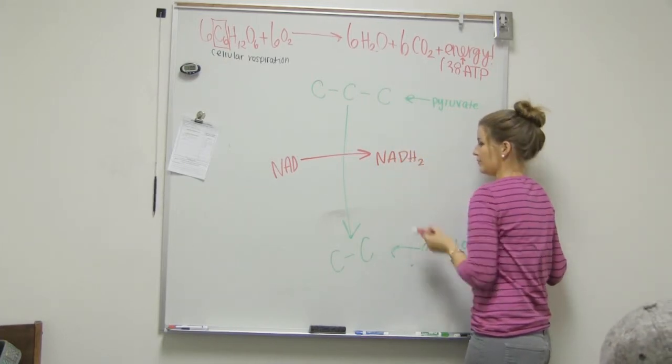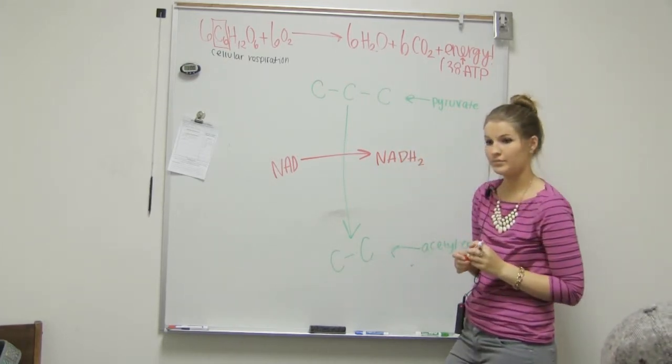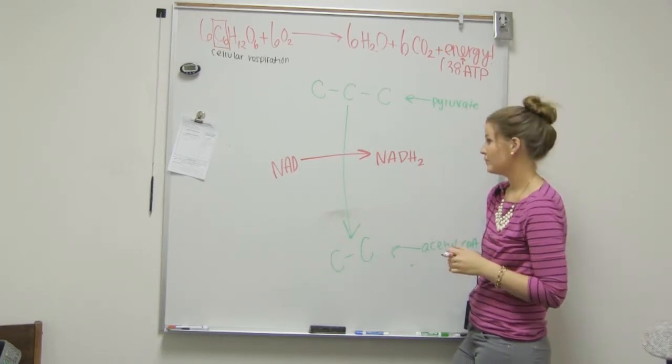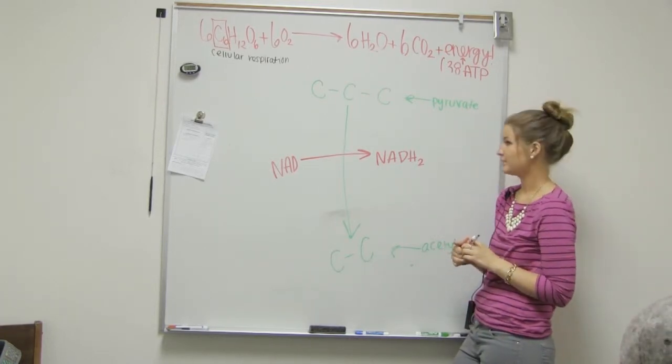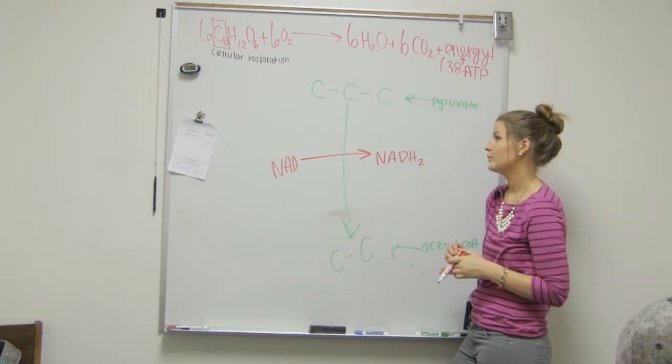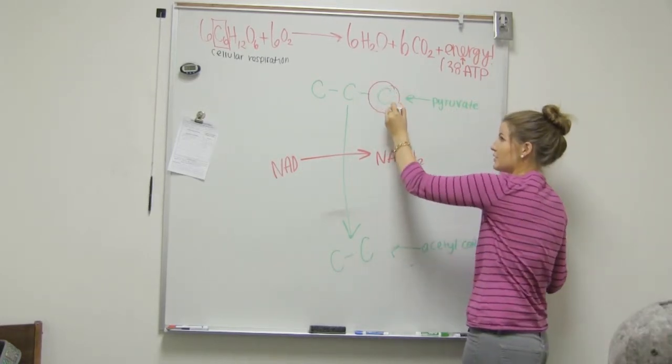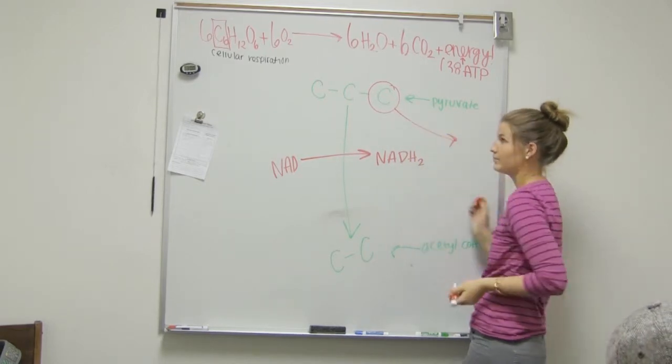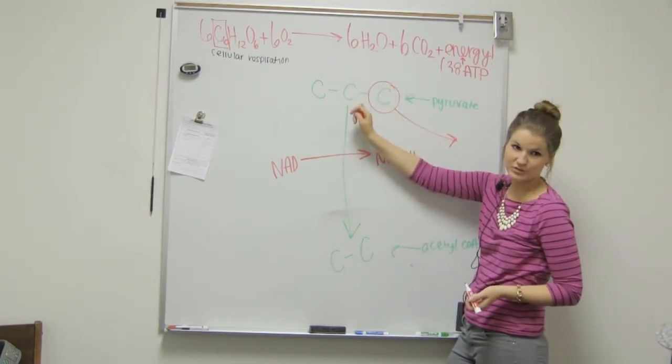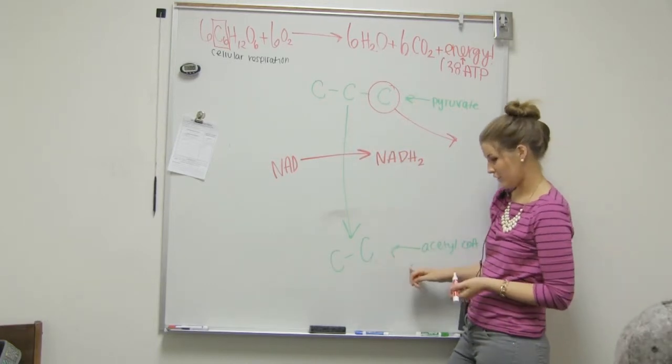So this is C, C, C. So you're just taking some more hydrogen from that then? Uh-huh. Okay. While doing that, we're going to strip off this carbon. Okay, so if we take it off, what are we left with? Two C's. Yeah. Which is acetyl-CoA.